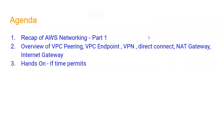Today we'll understand VPC peering, VPC endpoint, VPN, and we'll study about firewalls. In a physical network we had a firewall so not anyone could access our system. Similarly in AWS we have a firewall concept achieved through two services: security group and NACL (Network Access Control List). Finally, we'll do a hands-on lab - today I'll show you how to create a VPC, and in upcoming labs we'll cover VPC peering and VPC endpoints in detail.